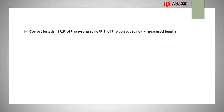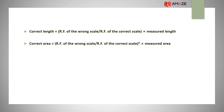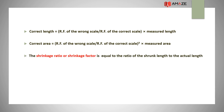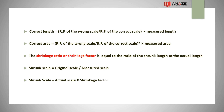The corrected length is calculated as: RF of the wrong scale divided by RF of the correct scale, multiplied by the measured length. Corrected area = (RF of wrong scale / RF of correct scale)² × measured area. Corrected volume = (RF of wrong scale / RF of correct scale)³ × measured volume. Shrinkage ratio or shrinkage factor is the ratio of the shrunk length to the actual length. Shrunk scale = actual scale × shrinkage factor.